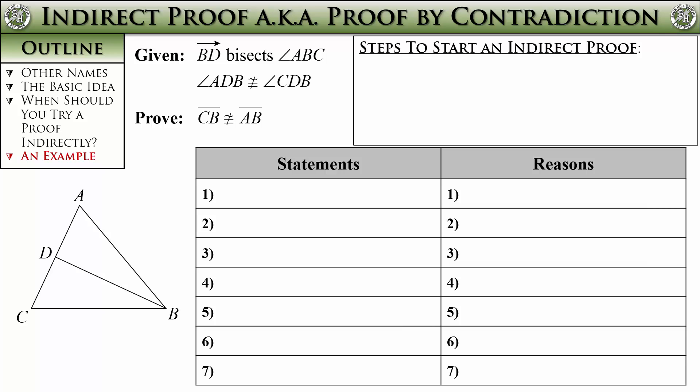Traditionally you see more paragraph proofs compared to two-column proofs when dealing with proof by contradiction, but I will show you both. Even if you are doing a paragraph proof, these tips for how to start the two-column proof will help you plot out how you will proceed. Here we have two not-congruent symbols in the proof, which leads me to say that an indirect proof is needed. Let's try it out.